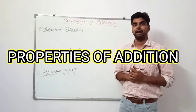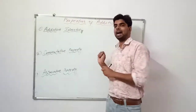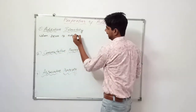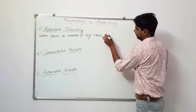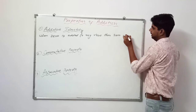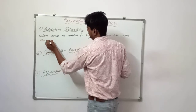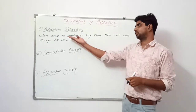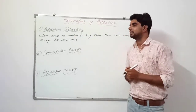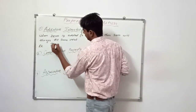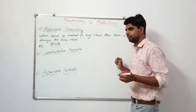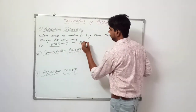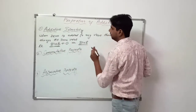Hello students, today we learn properties of addition. The first property is the Additive Identity Property. What it says is: when 0 is added to any value, the sum will always be the same value. For example, suppose the number is 8108. If we add 0 to it, then the sum will always be 8108 — the same number.